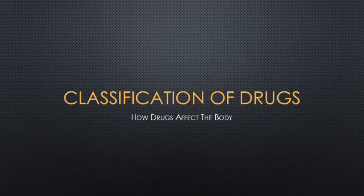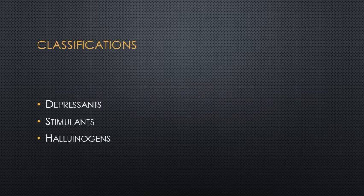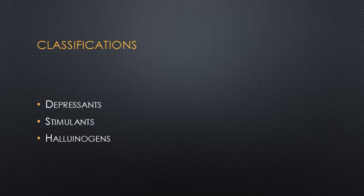Hi! Time to look at the classification of drugs. Drugs get classified basically on how they affect your body, so there are depressants, there are stimulants, and there are hallucinogens, and they all fall into one of those categories.